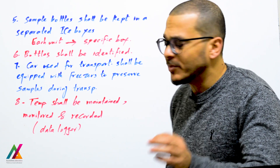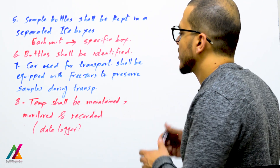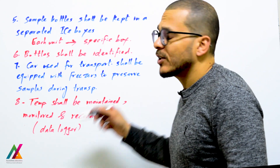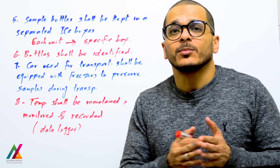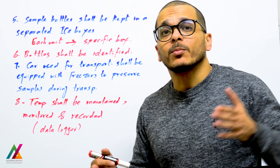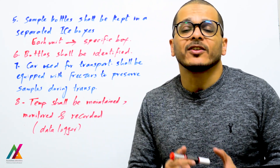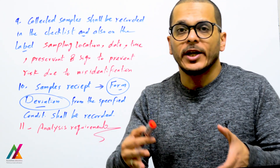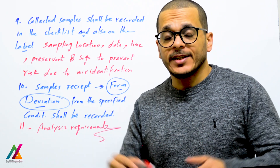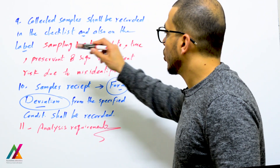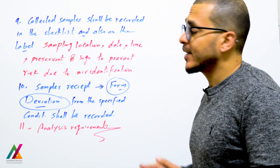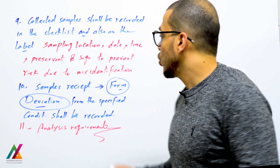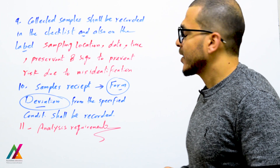The lab car used for transportation shall be equipped with freezers to preserve the sample during transportation, and temperature shall be maintained, monitored, and recorded by data logger throughout the journey from the field to the lab, with a specific form to record this temperature. When samples are collected, they shall be recorded in the checklist, and on the label you will record the sampling location, date, time, preservant added, and initials of the sampler — to prevent any risk due to misidentification.